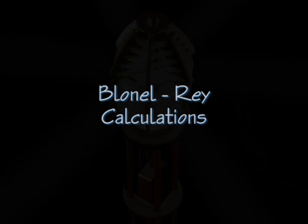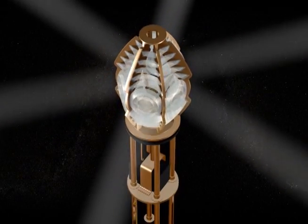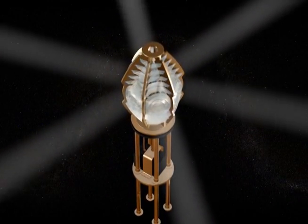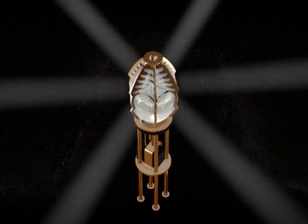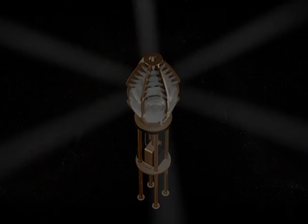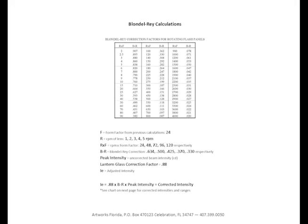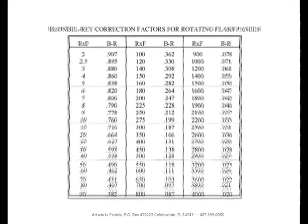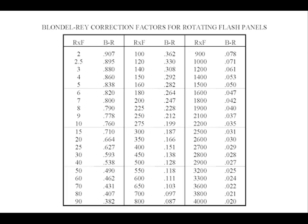The final step is to perform the Blondel Ray calculation. This formula takes into account the form factor from the previous calculation, the speed of rotation, and the light losses due to the transmission through the lantern room glass. In this chart on the top line, R refers to the speed of rotation of the lens, or RPM, revolutions per minute. F is the form factor, and B-R is the Blondel Ray correction factor.